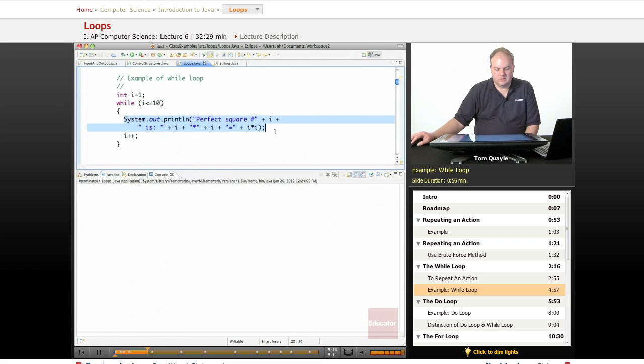I have my println statement using the current value of i multiple times. I have an increment operator here to increase the value of i so that eventually i will no longer be less than or equal to 10.